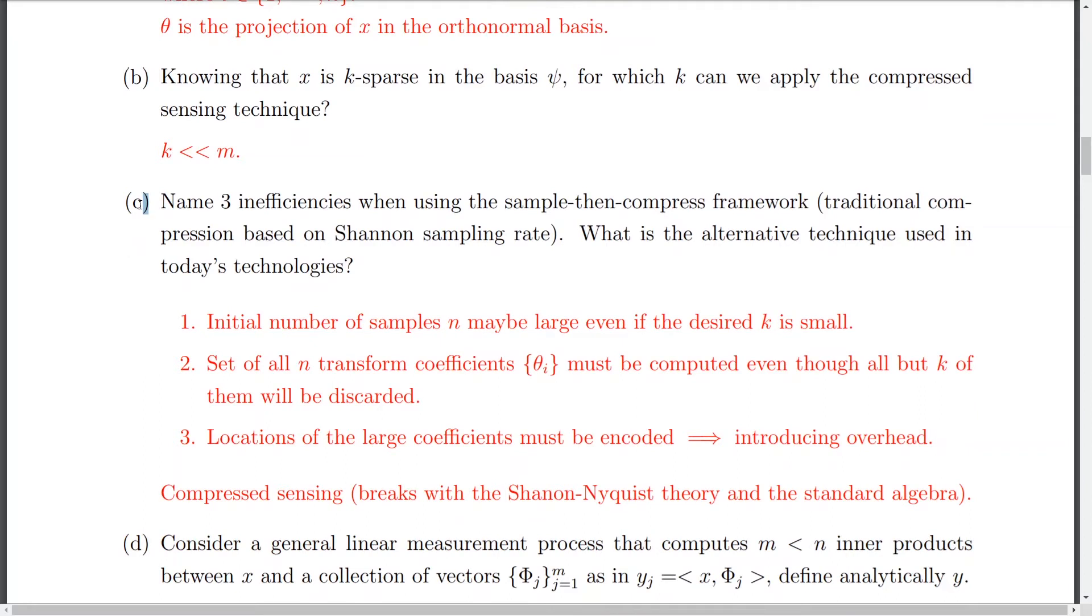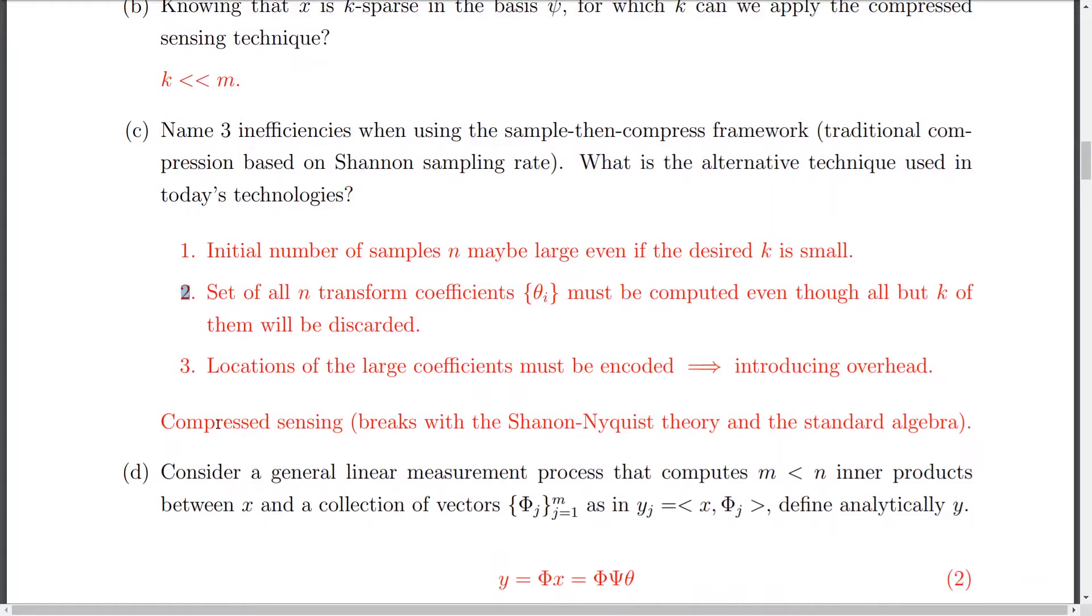So then name three inefficiencies when using the sample, then compress framework, which is this traditional compression based on Shannon sampling, Shannon Naquist sampling rate. The three inefficiencies, like there are a lot of inefficiencies, but that came across my mind when writing this. First of all, the initial number of samples N may be actually large, even if the desired K is small, like measuring unnecessary data. Second, the set of orthonormal transformed coefficients. They must be computed even though all but K of them will be discarded. So waste of computation and transmission and so on. And finally, the location of the large coefficients or the non-zero coefficients must be encoded. We need to know where they are placed.